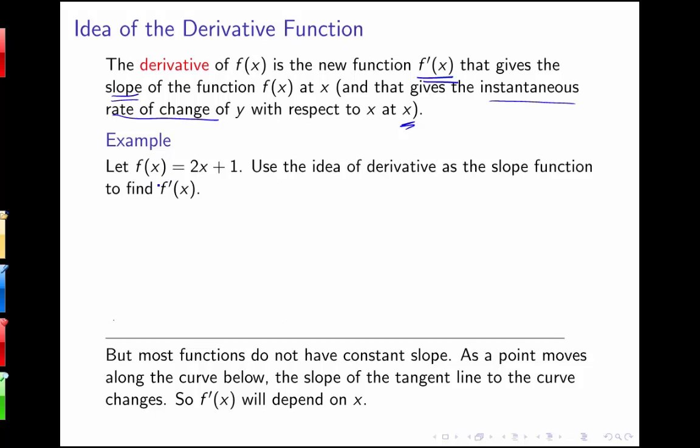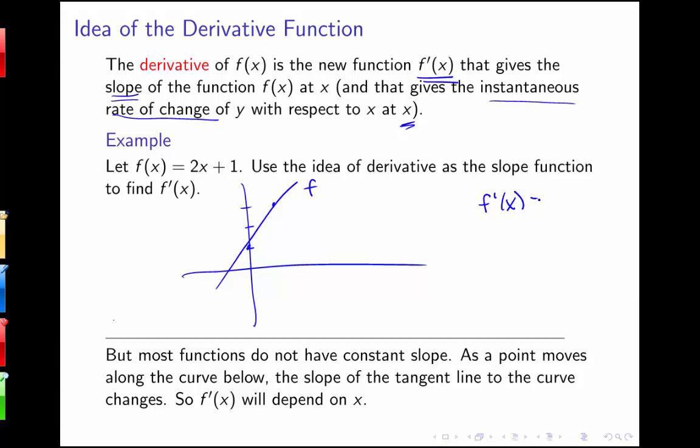Let's take a look at this first example. Let's say we have f of x equals 2x plus 1, and we want to use the idea of the derivative as the slope function to find f prime of x. If I have my graph of 2x plus 1, this crosses at 1, up 2 and over 1. Using what I know about the derivative as slope, f prime of x should be equal to the slope of this line at each x, so f prime of x should be 2.